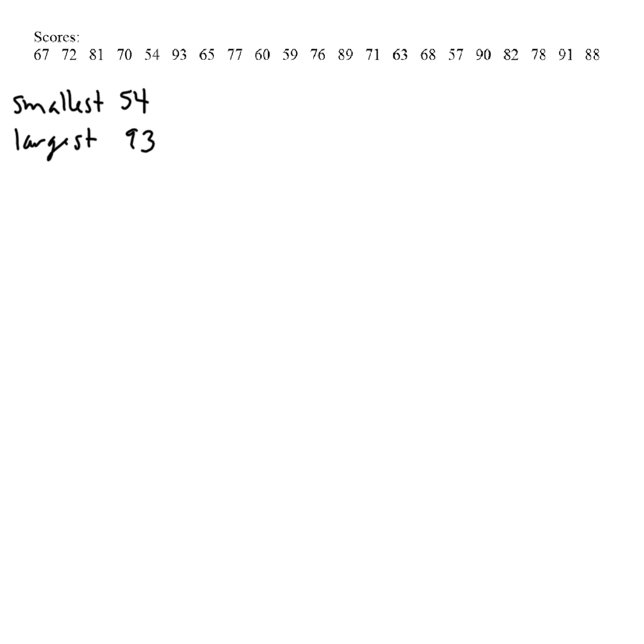Then what you're going to do is calculate something called the range. So you're going to calculate the difference between the largest minus the smallest. That's what the range is. When you do that, it will give you your range of data. It will tell you what range all the numbers fall within. And when you do that, you get 39.